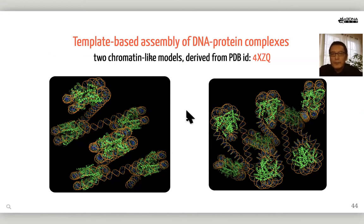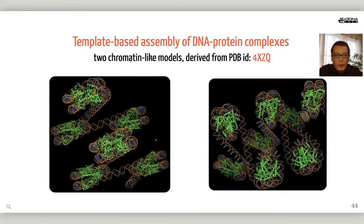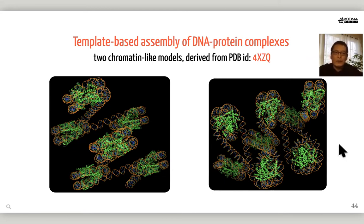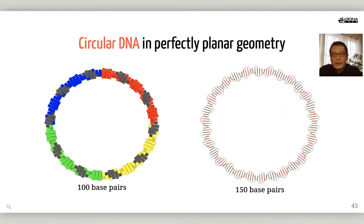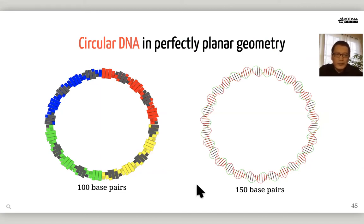This module has been integrated into DSSR and substantially improved. DSSR can perform template-based assembly of DNA-protein complexes. Here are two chromatin-like models built using PDB entry 4XZK. By simply varying the length of the linker, you can generate two different topologies. DSSR also can generate circular DNA with perfect planar geometry — one example with 100 base pairs, another with 150 base pairs. These are generated from the command line in less than a second.